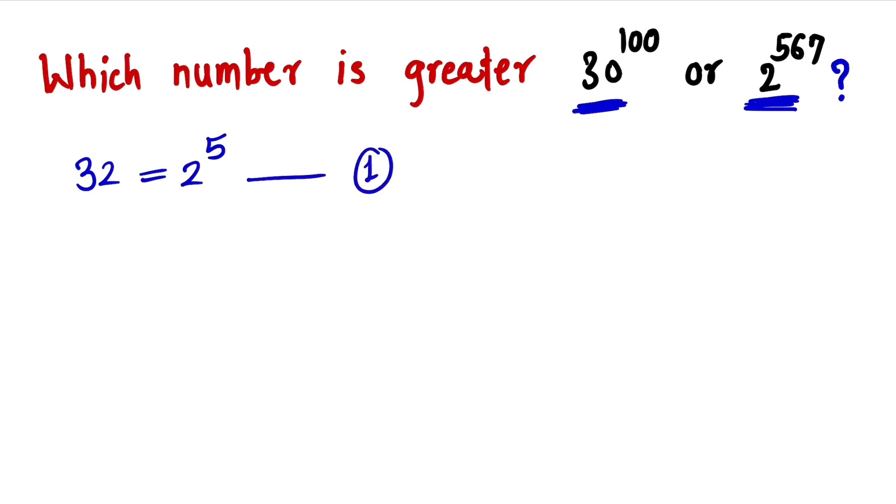Now the second step is we know that this 30 is less than 32. And we want the power to be 100, so take the power as 100 on both the sides.